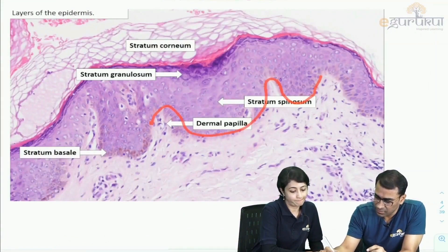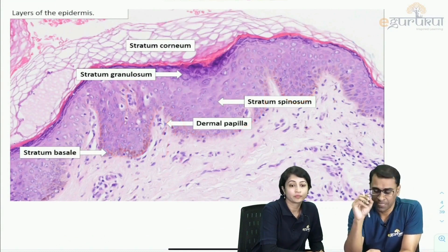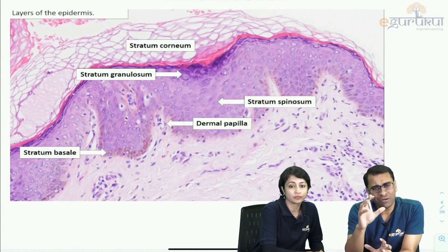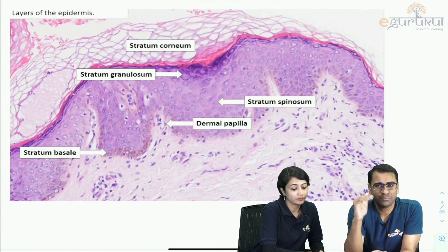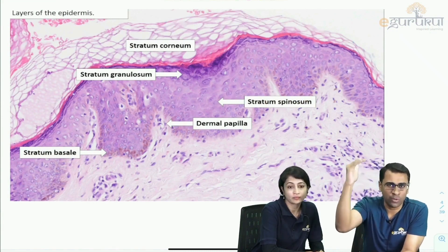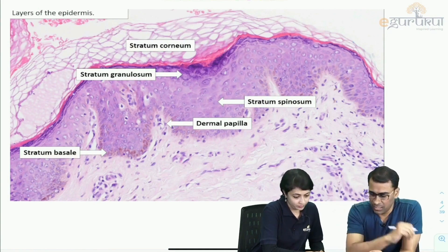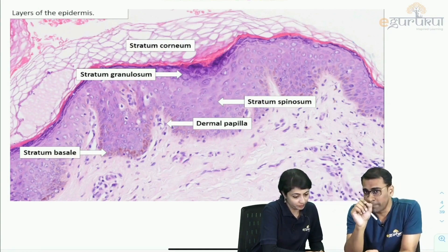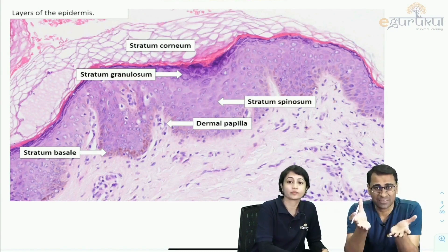Below the spinosum is the stratum basale, followed by the dermal papilla — this area is called the rete ridges. A useful memory tip: G comes before S, so stratum granulosum is above stratum spinosum. The spinosum layer has cells connected by cadherins, which are desmosomal proteins that hold the cells together.